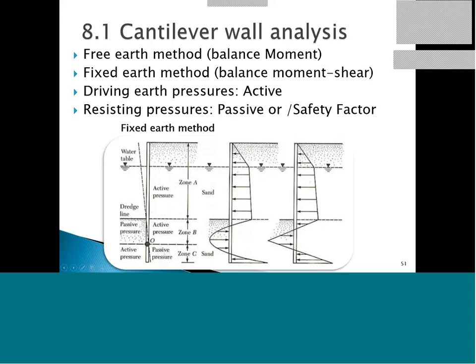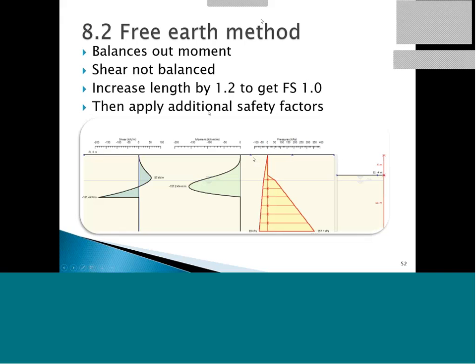Looking into cantilever walls: we have the free earth method and the fixed earth method. In the free earth method, we balance out the moments. In the fixed earth method, we assume a rotation point with active and passive pressures alternating. We can use the resistance pressure as fully passive or apply a safety factor. In the free earth method, the shear doesn't balance out — which isn't realistic. When we get a safety factor of one, it's not really one — we have to increase the length by at least 1.2 to get a true factor of 1.0, and then apply additional safety factors on top of that.